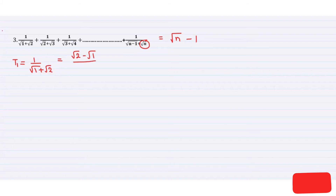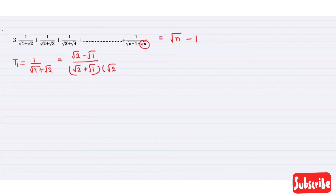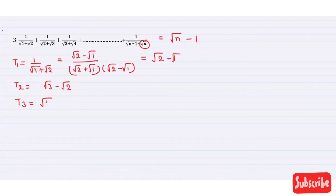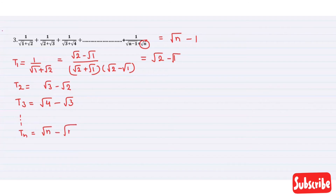After rationalizing, T1 gives √2 − √1, T2 gives √3 − √2, and T3 gives √4 − √3. In general, Tn equals √n − √(n−1). Now we add all these terms: T1 + T2 + T3 + ... + Tn.